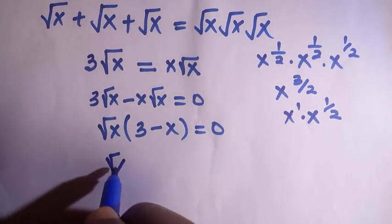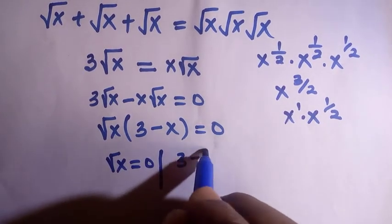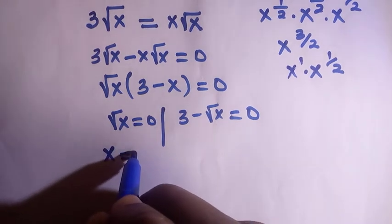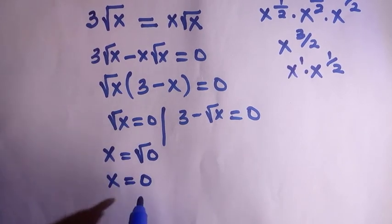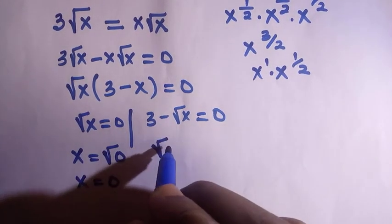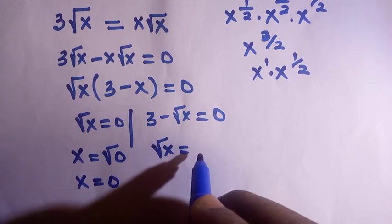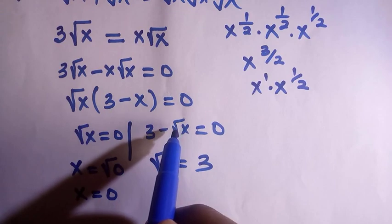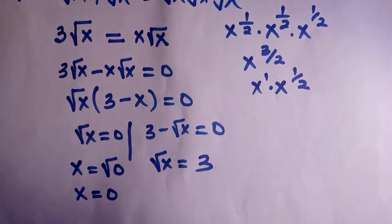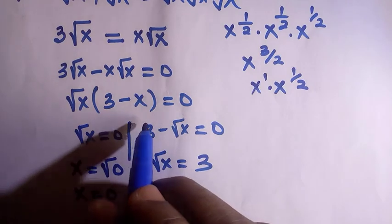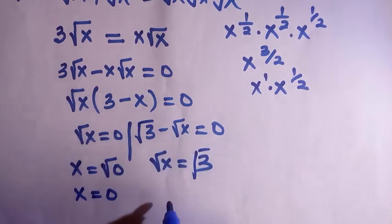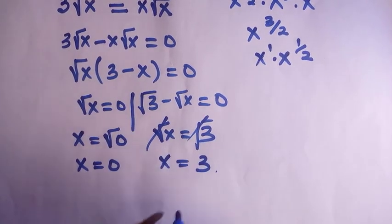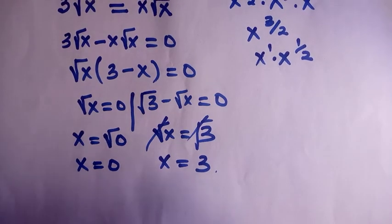From √x = 0 we get x = 0, since the root of zero is zero. From 3 − x = 0 we get x = 3. So the solutions from the first method are x = 0 or x = 3.